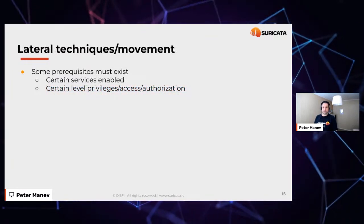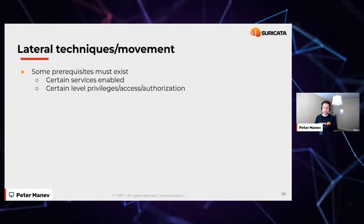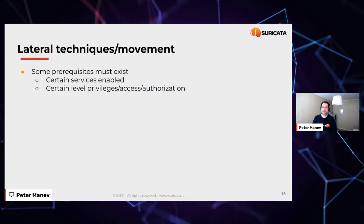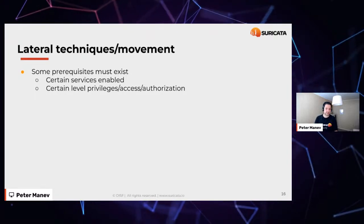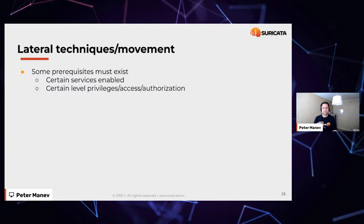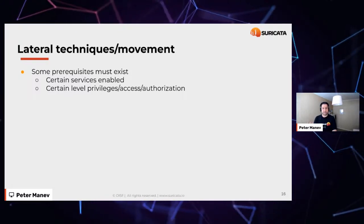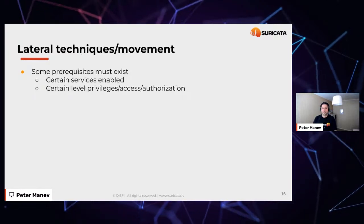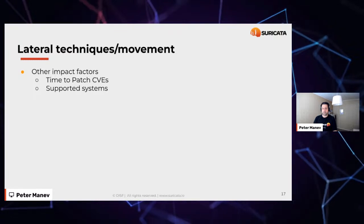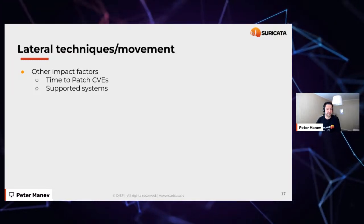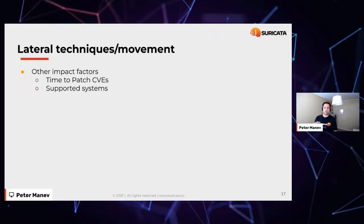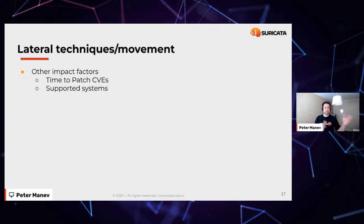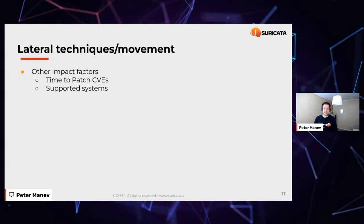For lateral movement to happen, some prerequisites must exist: certain services should be available or enabled, a certain level of privileges, and access authorization. If the machine is fully locked or not vulnerable, most likely you will not be able to get into that specific machine. Other factors that impact lateral movement include time to patch CVEs — the gap between when a patch is produced and when it's actually deployed — which requires time and is definitely an impact factor.